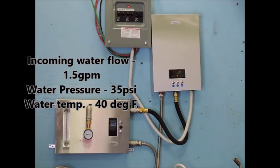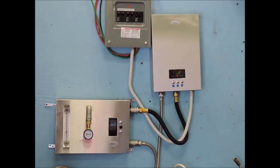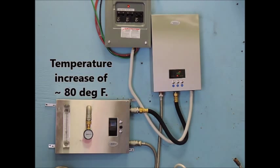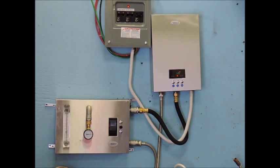Here we drop the flow down even further to 1.5 gallons per minute, still with 35 psi and incoming of 40 degrees Fahrenheit. With this change, we are getting an 80 degree rise, giving us an outgoing water temperature of 120 degrees Fahrenheit.